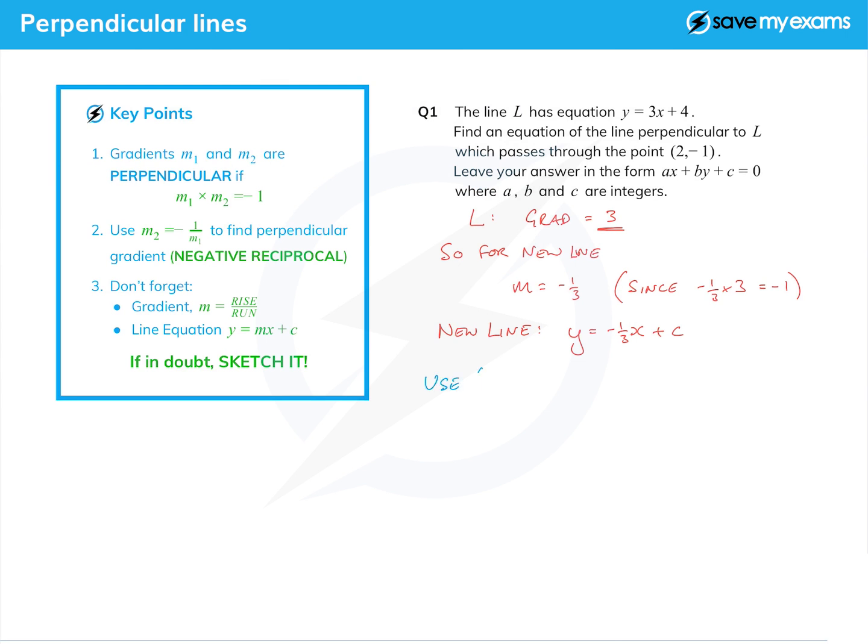To do that we're going to use the point we're given. We use (2, -1) which is of course an x value and a y value. We put minus 1 in for y and then we put 2 in for x.